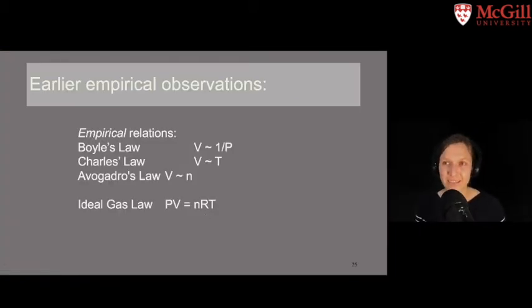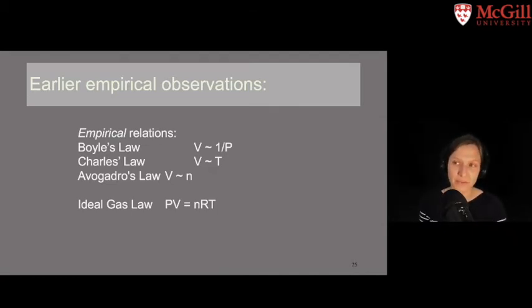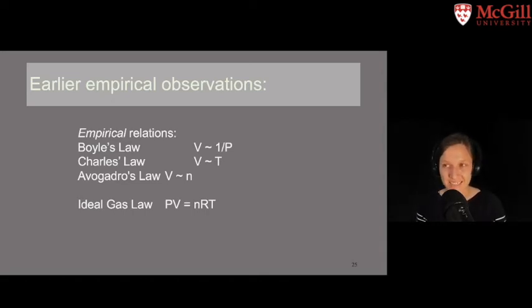Interestingly, before the equation of state for an ideal gas was known, in those early days of modern science, several scientists, Boyle, Charles, and Avogadro made several partial observations regarding the behaviors of gases. The equation of state contains these relationships between the volume, pressure, and temperature, and the number of particles, and provides a unifying picture that contains the partial observations in it.